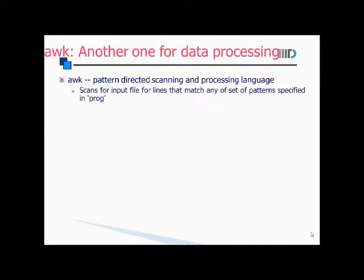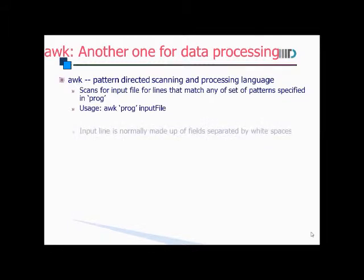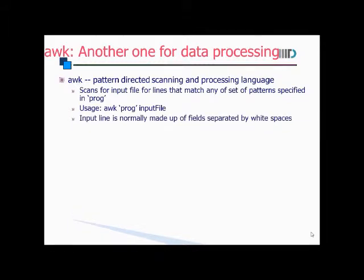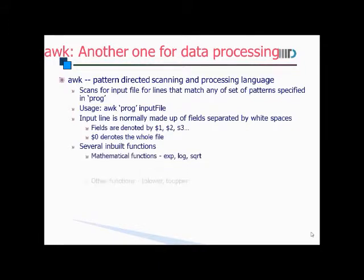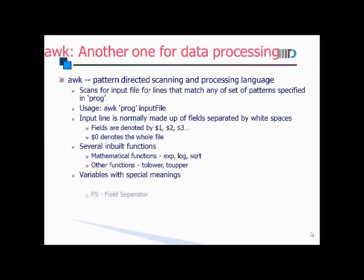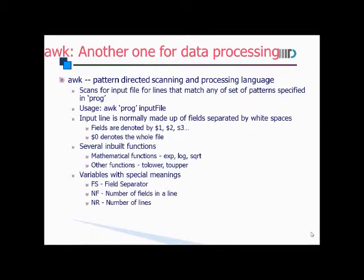Awk scans an input file for lines that match any set of patterns specified in a program. Usage: awk prog inputfile. The input line is normally made up of fields separated by white spaces. Fields are denoted by $1, $2, $3, etc. $0 denotes the whole line. There are several built-in functions like the mathematical functions exp, log, and sqrt, and other functions like tolower and toupper. The variables with special meanings are FS for field separator, NF for number of fields in a line, and NR for the number of lines.